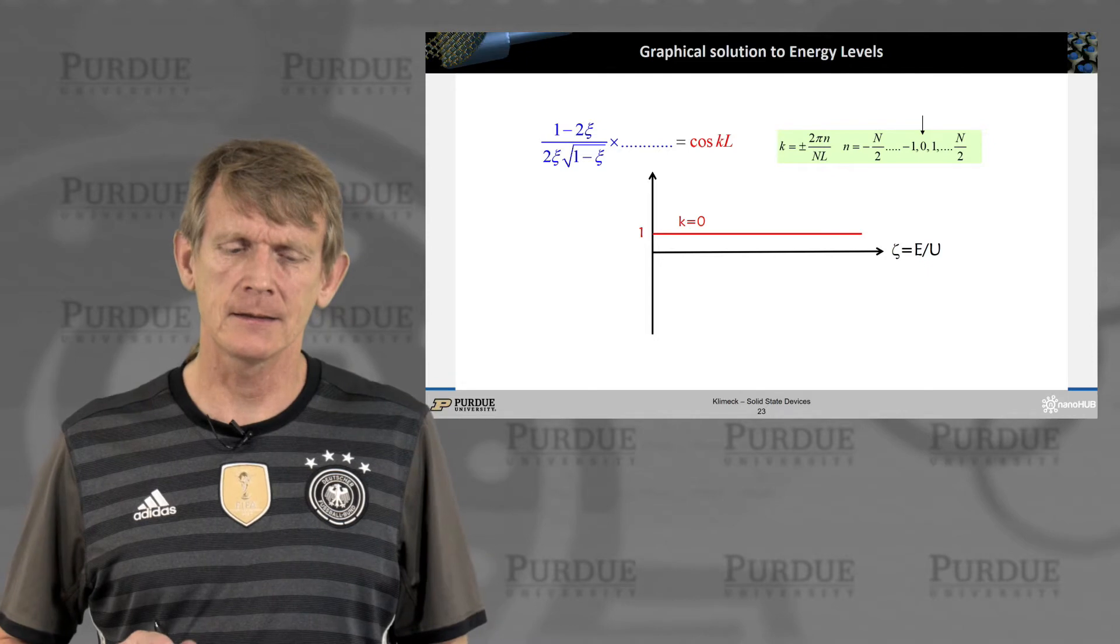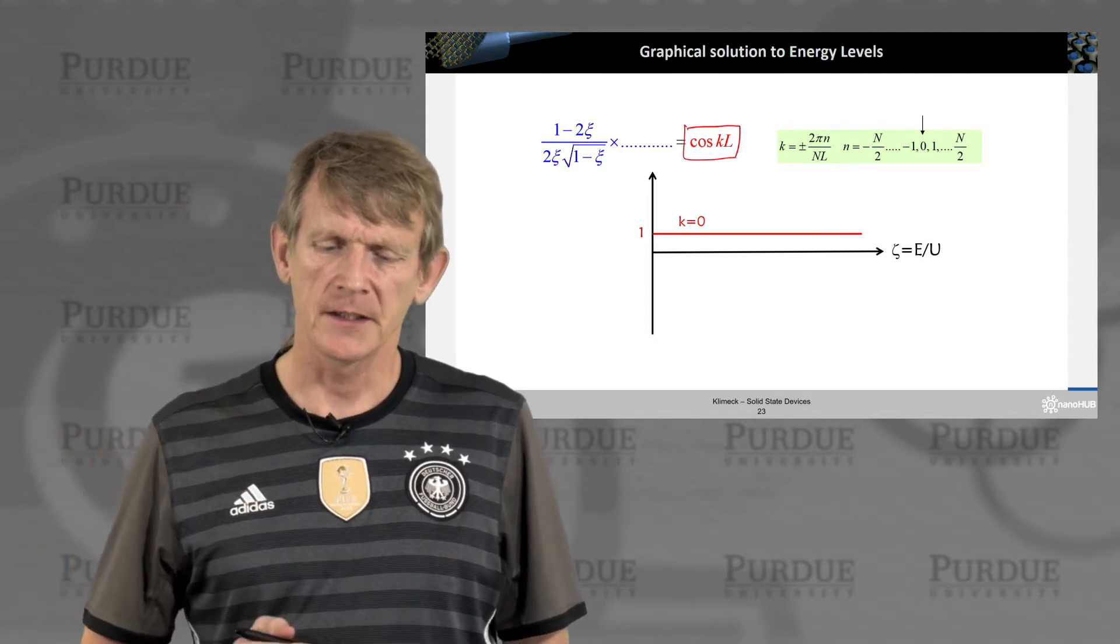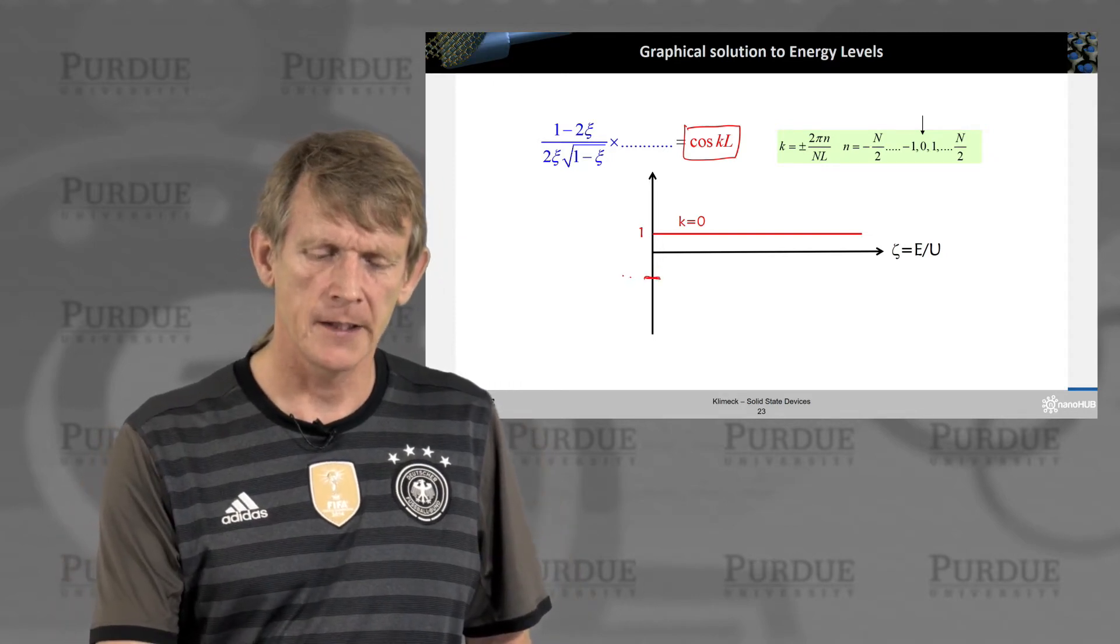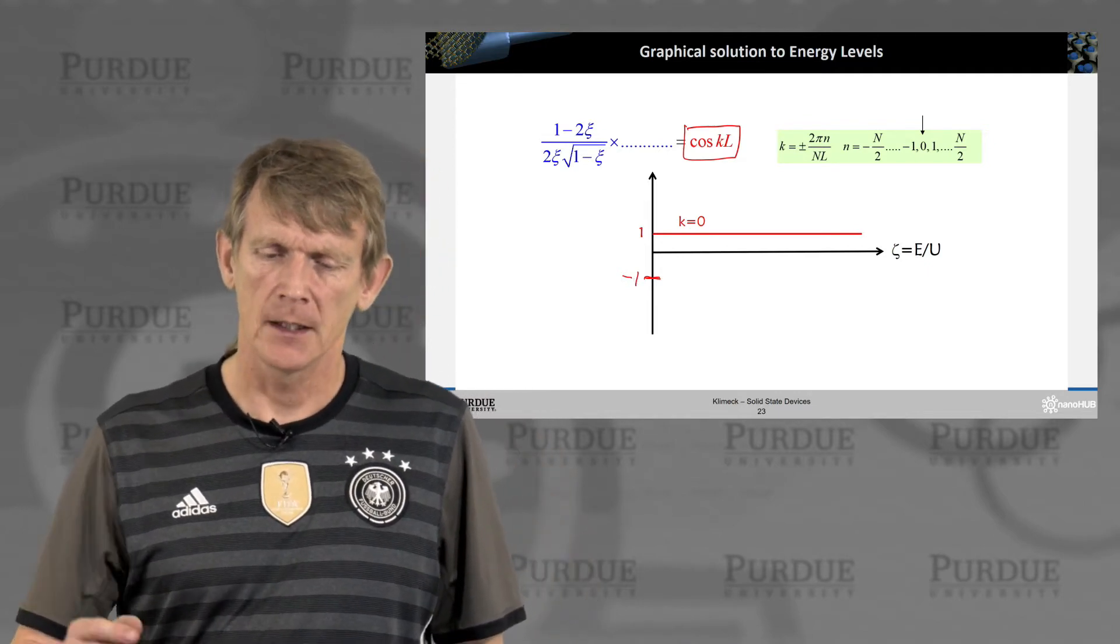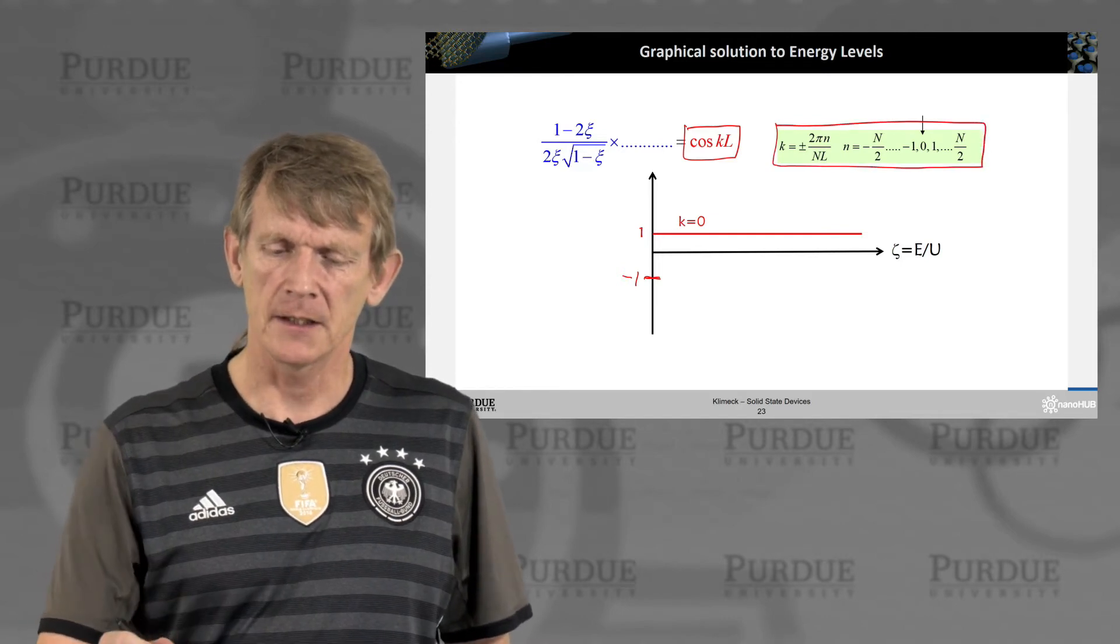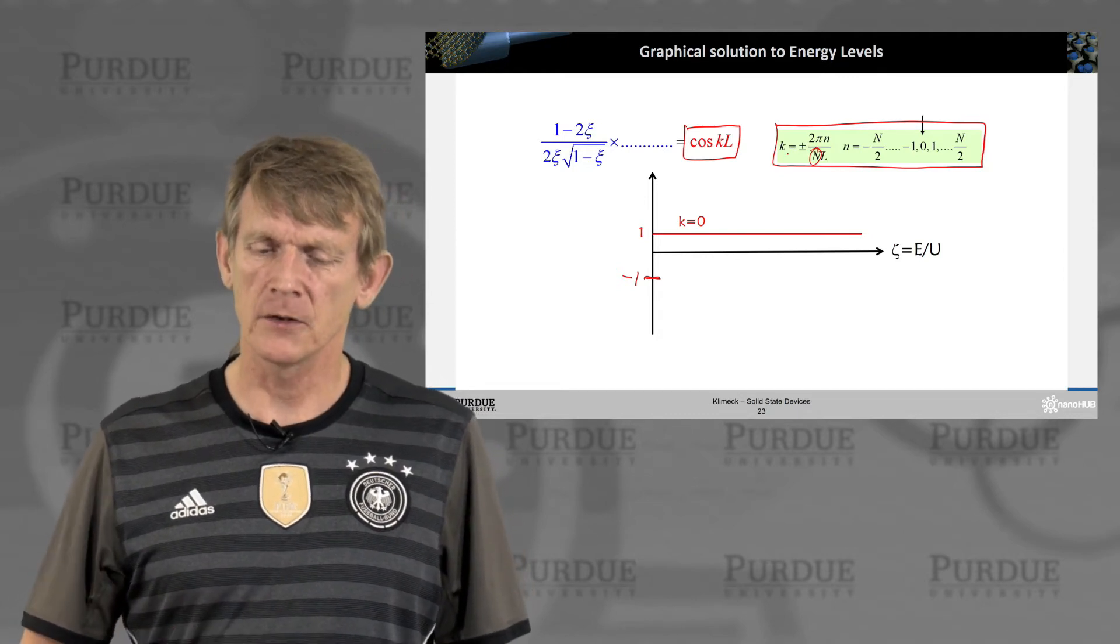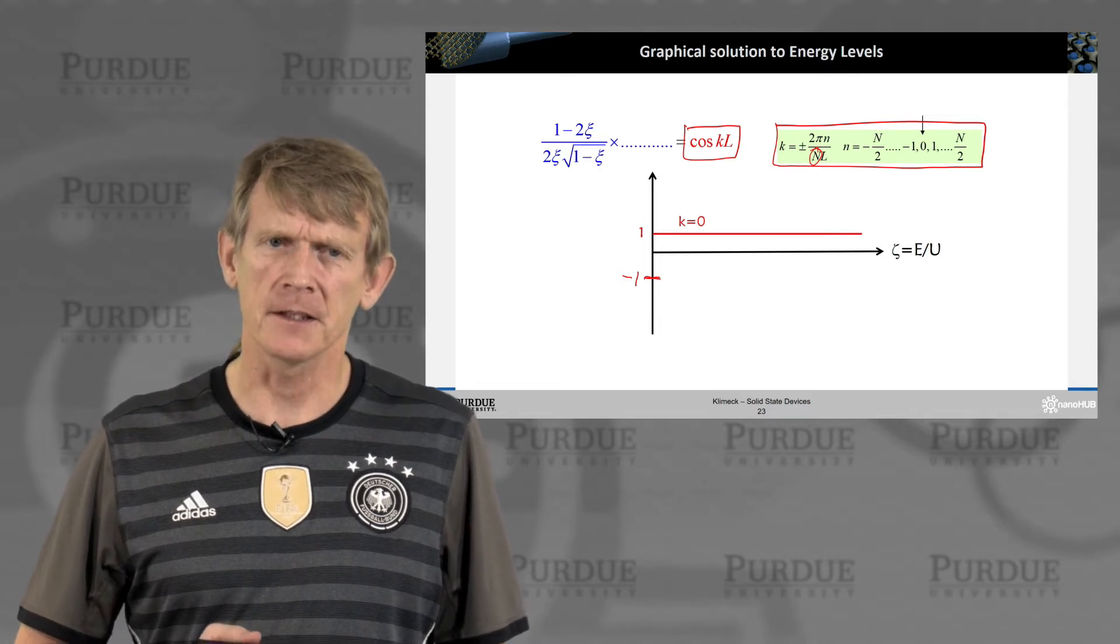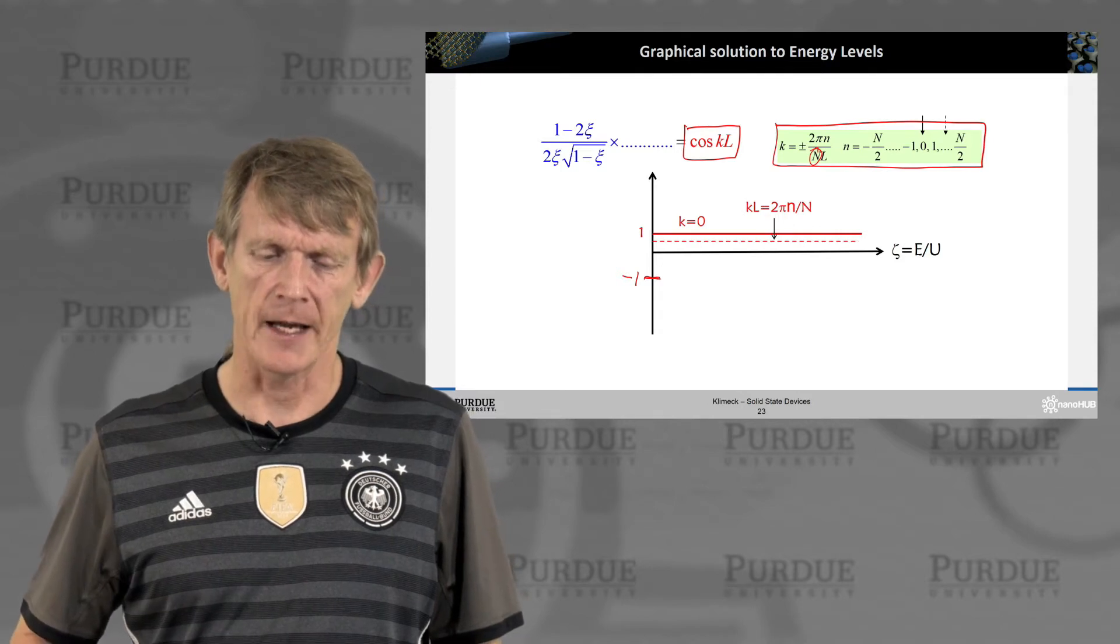Let's look at the right-hand side. It's a cosine kL. That's a periodic function that varies between minus 1 and 1. And for any given k, and k is now discrete as shown here, where it takes on capital N values, and they range from minus N over 2 to N over 2, and they're discrete in their spacing.